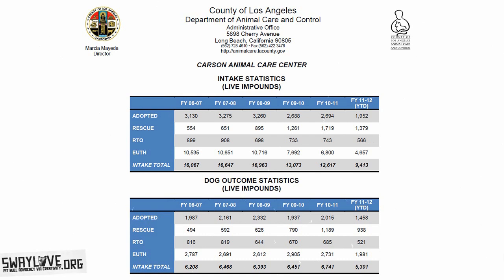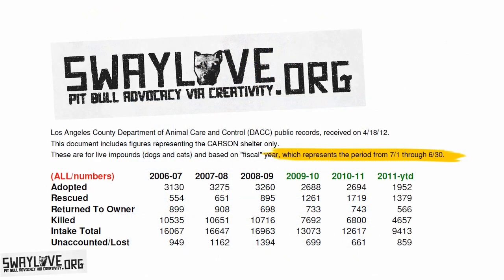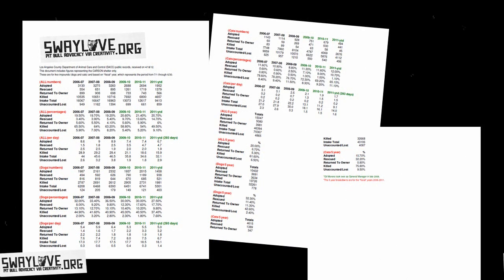LA County doesn't use calendar years, so their years are broken down into fiscal years — July 1st of one year through June 30th of the next. With the numbers they gave me, I created a new document that thoroughly breaks down the numbers in a handful of different ways. You can download my document right below this video.